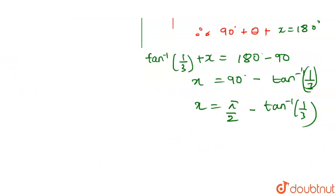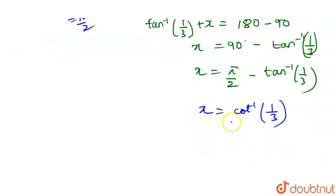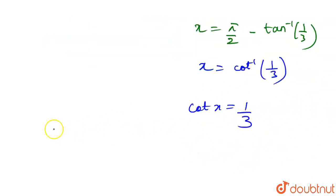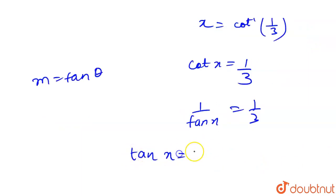The identity states: cot⁻¹θ + tan⁻¹θ = π/2, so cot⁻¹θ = π/2 - tan⁻¹θ. Using this identity: x = cot⁻¹(1/3). Multiplying through using cot: cot(x) = 1/3. Since cot(x) = 1/tan(x) = 1/3, we get tan(x) = 3.